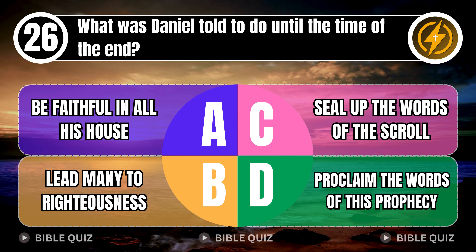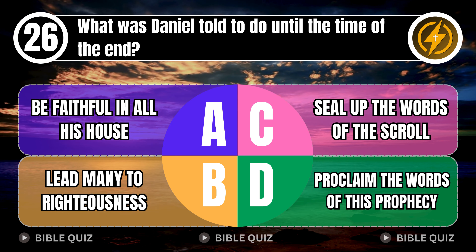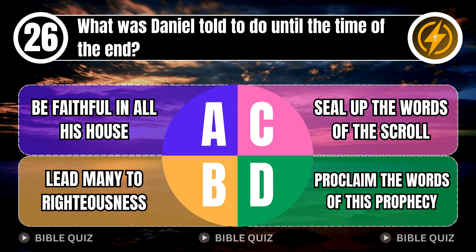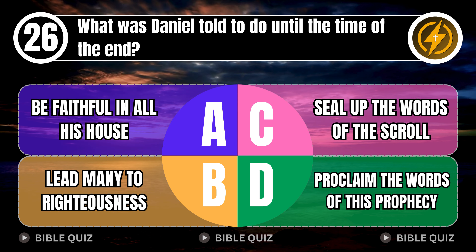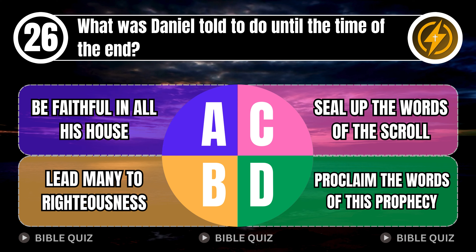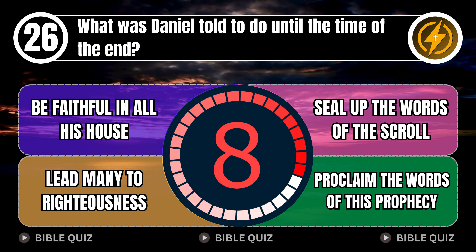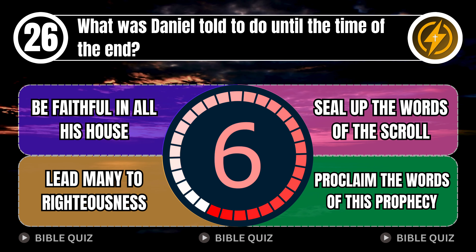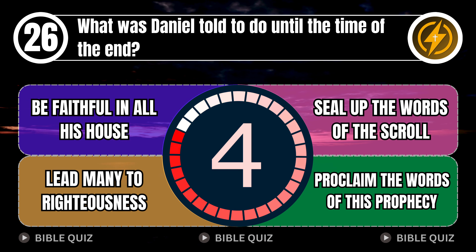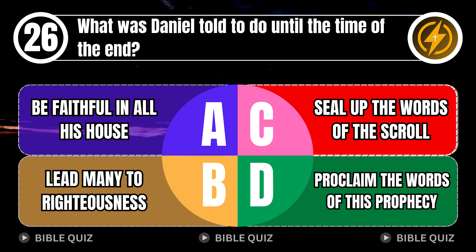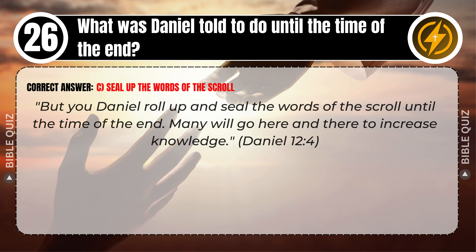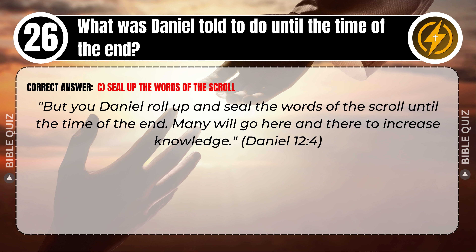Question 26: What was Daniel told to do until the time of the end? A. Be faithful in all his house. B. Lead many to righteousness. C. Seal up the words of the scroll. D. Proclaim the words of this prophecy. Correct answer: C. Seal up the words of the scroll. But you, Daniel, roll up and seal the words of the scroll until the time of the end. Many will go here and there to increase knowledge. Daniel 12 verse 4.